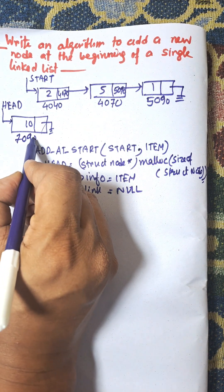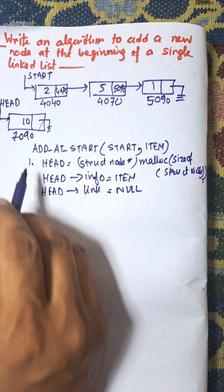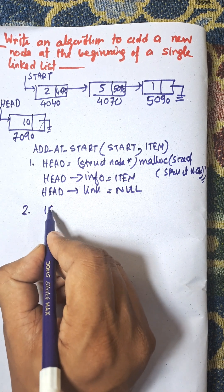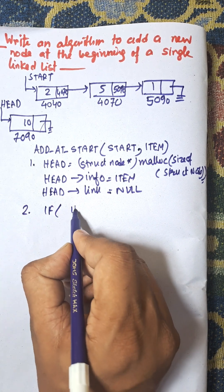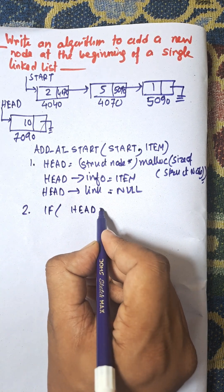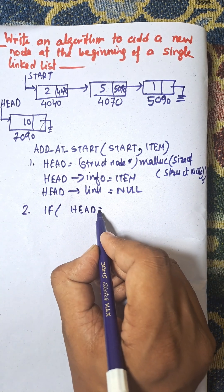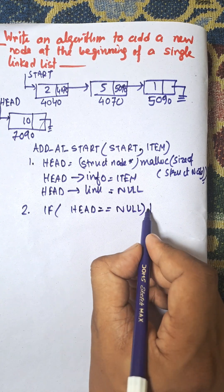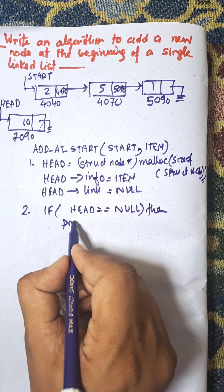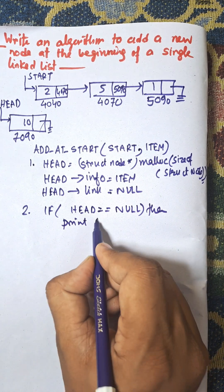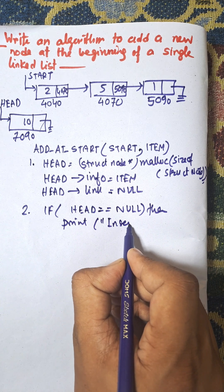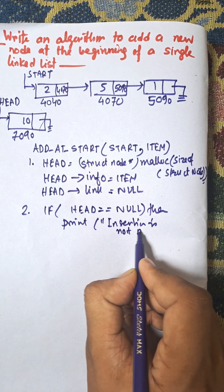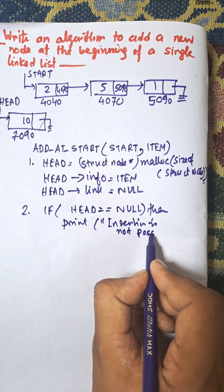Suppose the new node is at address 7090. Step 2: If head equals null, meaning no memory is available in the system, then print 'insertion is not possible' and exit.